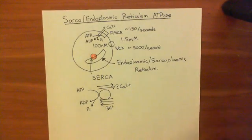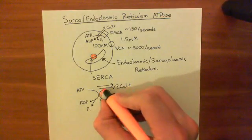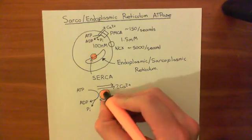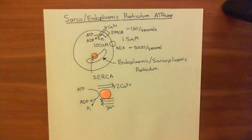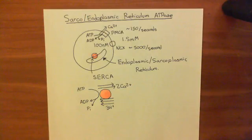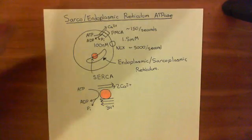So SERCA pumps two calcium ions into the endoplasmic reticulum using ATP hydrolysis to provide the energy, and it couples the movement of two calcium ions into the endoplasmic reticulum lumen with the movement of free protons out of the endoplasmic reticulum lumen. In the next video, we'll look at the actual detailed mechanism by which SERCA works.